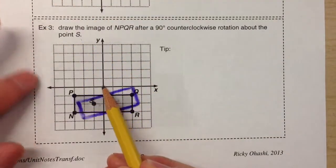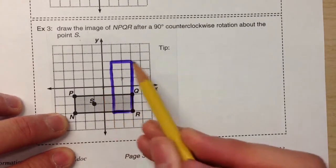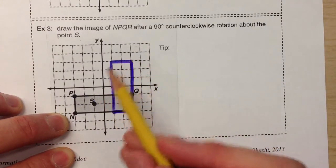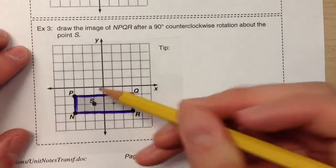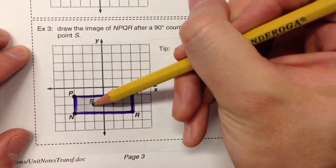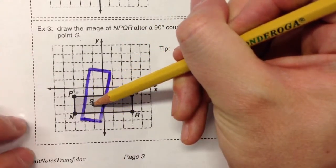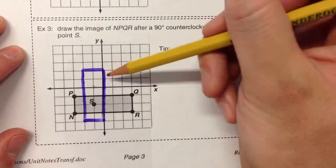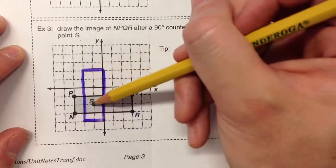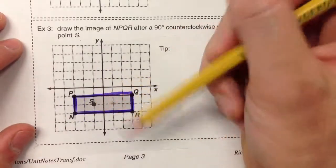So when we held our point at the origin, the shape was on the right side of the y-axis. However, if we put our pencil point on point S and rotate it, the shape is on the left side of the y-axis. It's going to be oriented the same way, but in a different location.